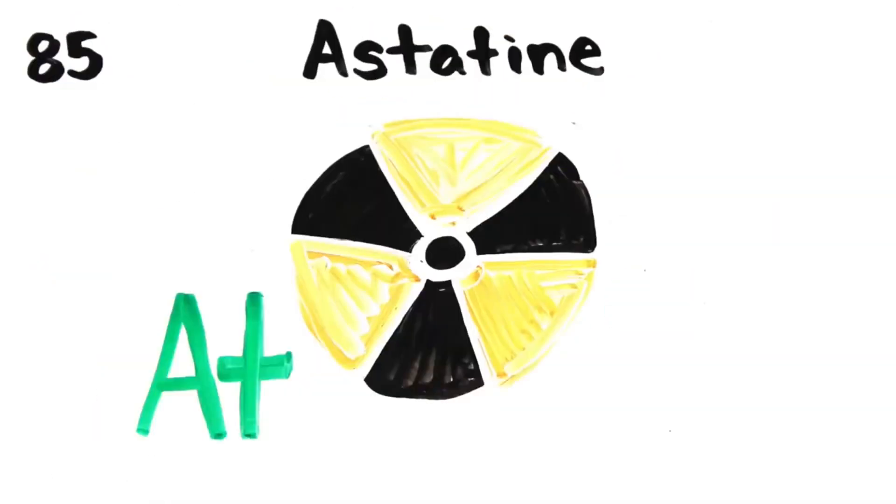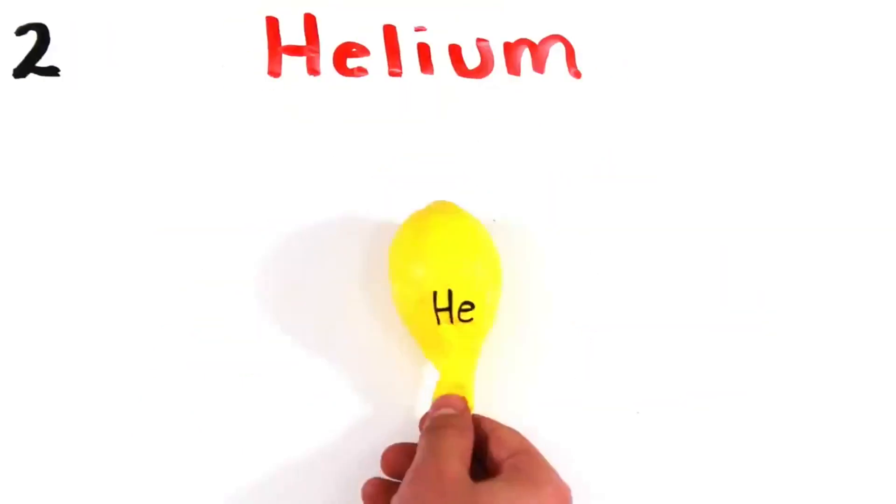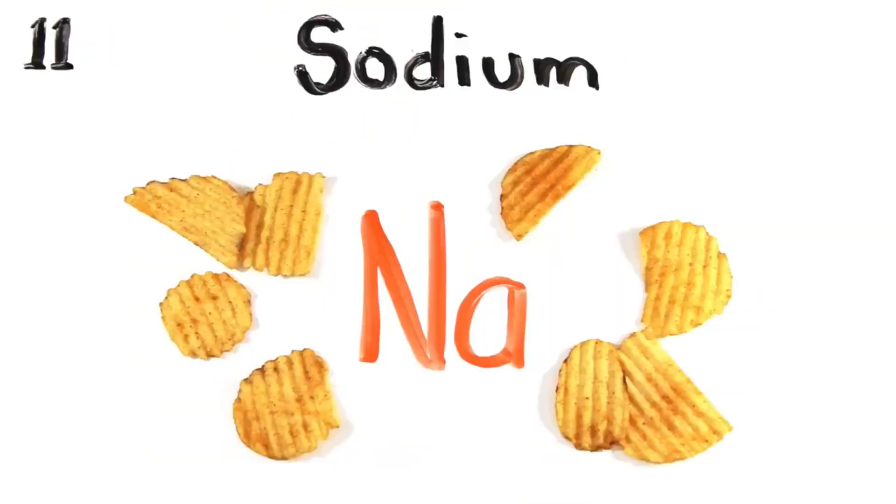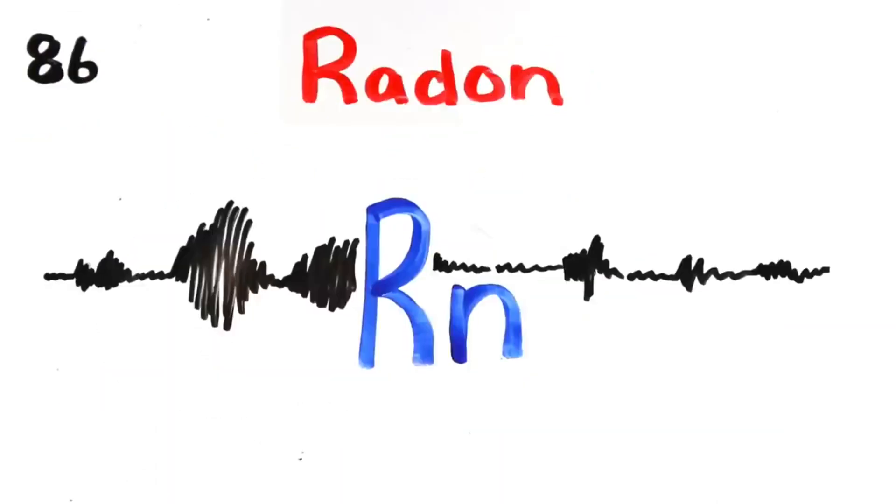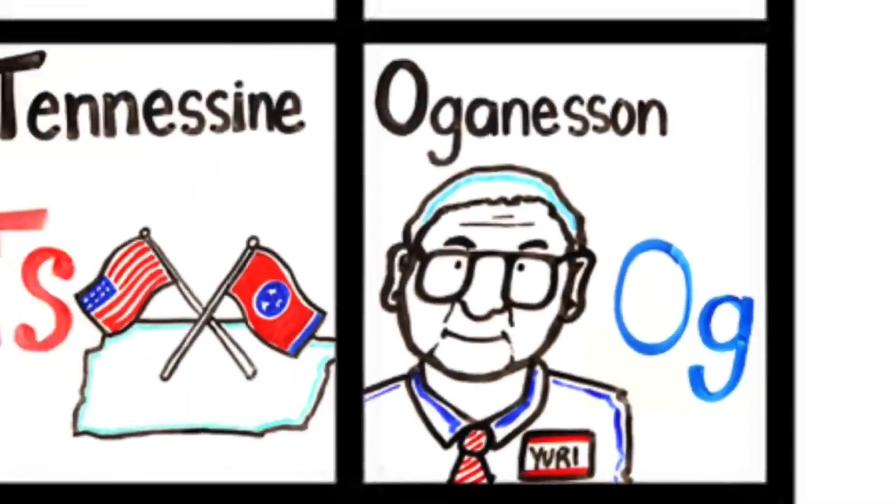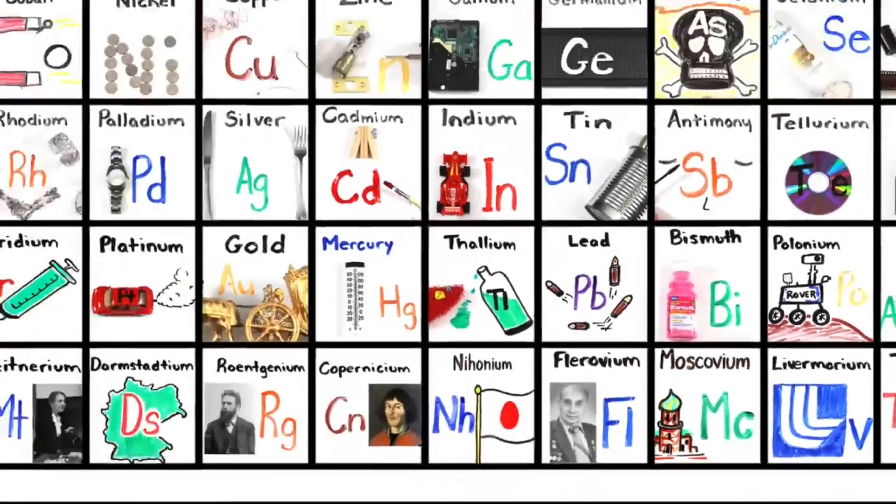Iodine and Astatine would not be yummy, Tennessine and Helium and Neon to light up the signs, Argon, Krypton helps light up your Xenon and Radon, Oganesson! And then we're done!